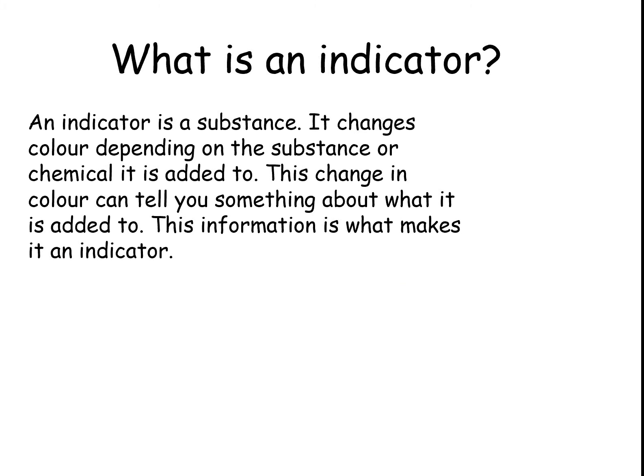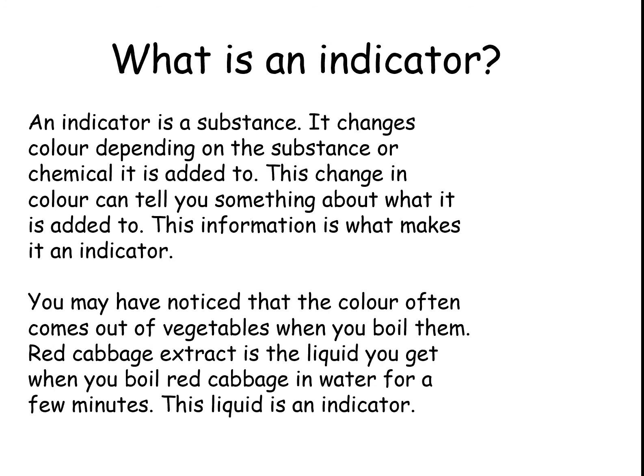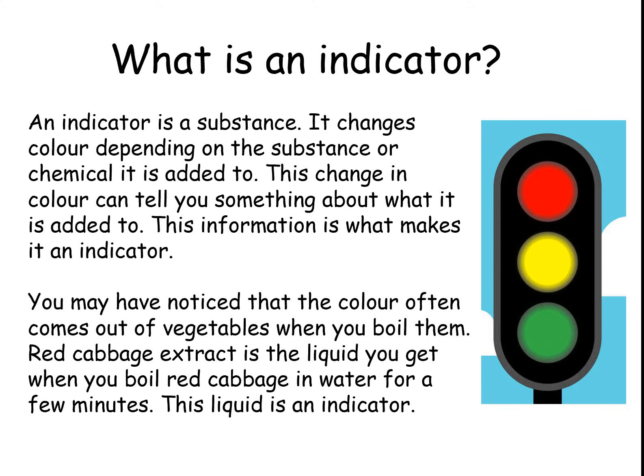So what is an indicator in terms of science? An indicator is a substance that changes colour depending on the substance or chemical it is added to. The change in colour can tell you something about what it is added to, and this information is what makes it an indicator. You may have noticed that when cooking vegetables or boiling them, the colour often comes out. The red cabbage extract is the liquid you get when you boil red cabbage in water for a few minutes, and this liquid is an indicator.